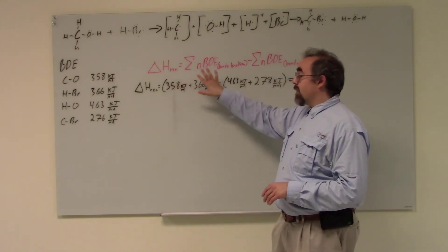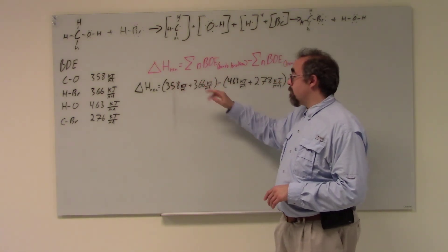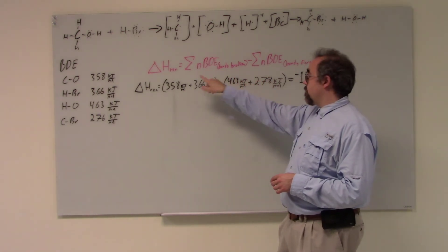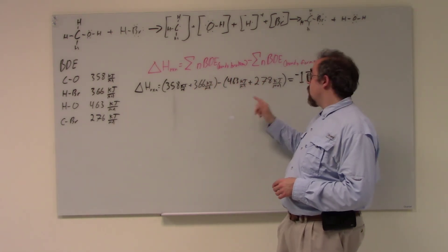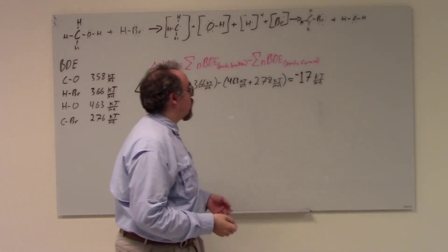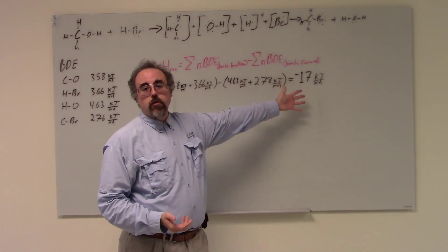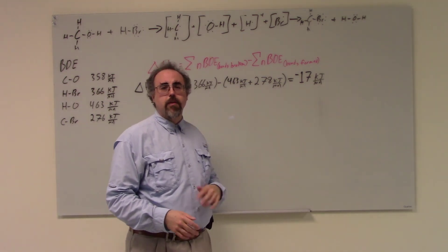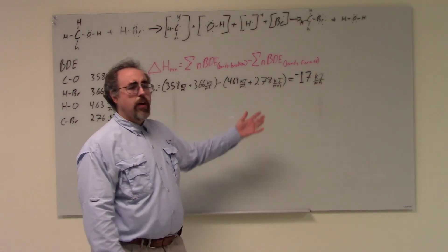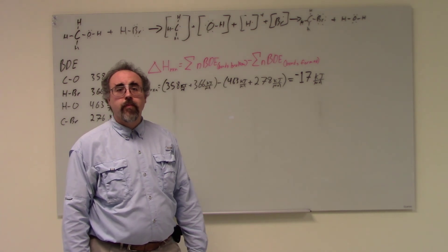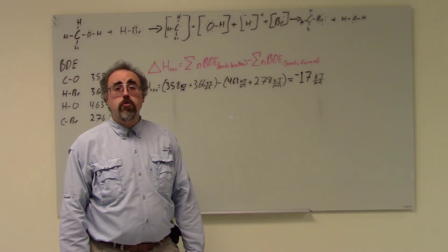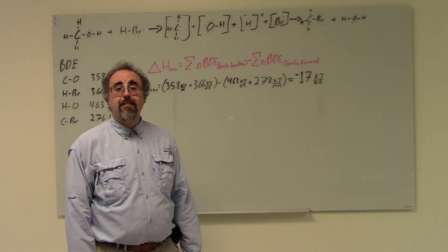So I take all the ones I'm breaking, I add them up, and I add up all the ones I'm going to form, and then broken minus form gives me my final answer, which in this case is 17 kilojoules per mole. So actually not that much. I mean it's non-trivial, but it's not that much for this particular reaction. Each reaction of course will be different.